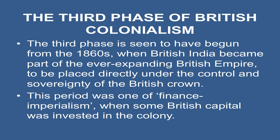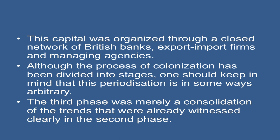The third phase is seen to have begun from the 1860s, when British India became part of the overexpanding British Empire, placed directly under the control and sovereignty of the British Crown. The period was one of finance imperialism, when some British capital was invested in the colony, organized through a closed network of British banks, export-import firms, and managing agencies. Although the process of colonization has been divided into stages, this periodization is in some ways arbitrary. The third phase was merely a consolidation of the trends already witnessed clearly in the second phase.